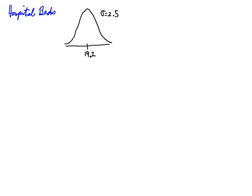The first question is: what is the probability that the number of patients needing beds will exceed the pediatric unit's capacity? The capacity is 24. So what's the probability that the number of beds needed — the random variable — exceeds 24 beds? I need to calculate the probability that X is greater than 24.